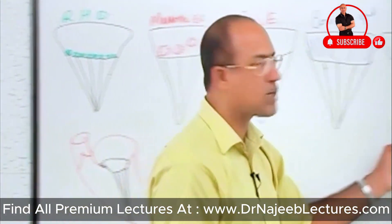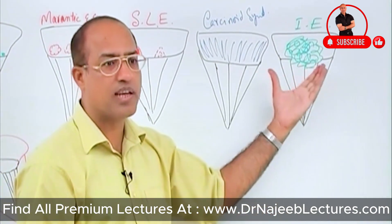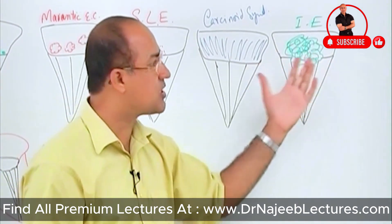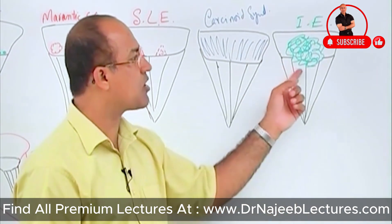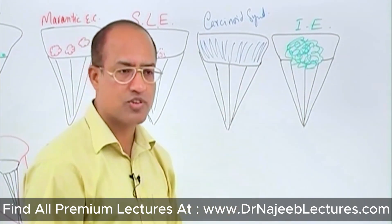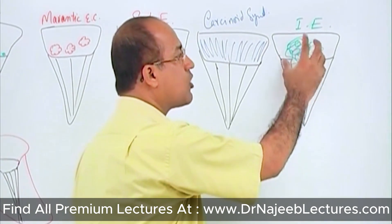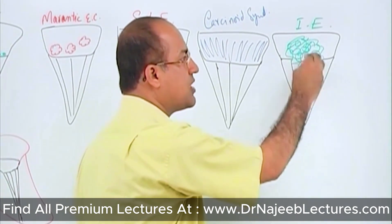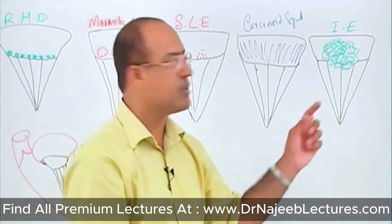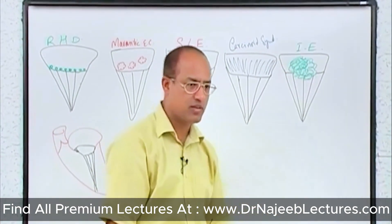When we compare rheumatic heart disease vegetations with the vegetations of infective endocarditis, infective endocarditis vegetations are very large. They are not sterile — they are having microorganisms. These are septic vegetations. These vegetations have a lot of inflammatory cells as well as microbiological agents, all of which are producing destructive substances. Due to that reason, these vegetations are not only large but they are friable also and they can easily break away and embolize, eventually leading to septic metastatic abscesses or septic emboli in the body.